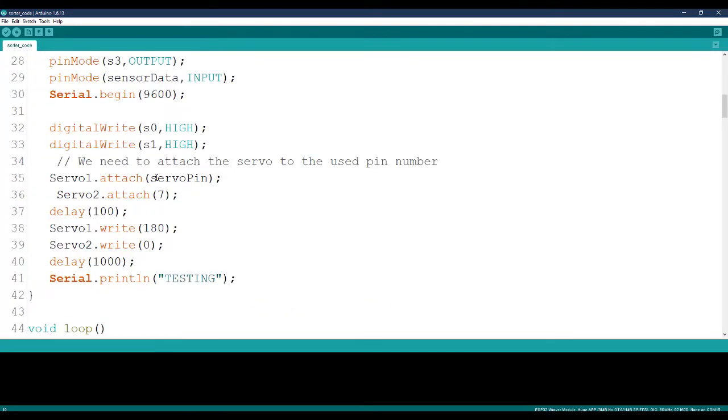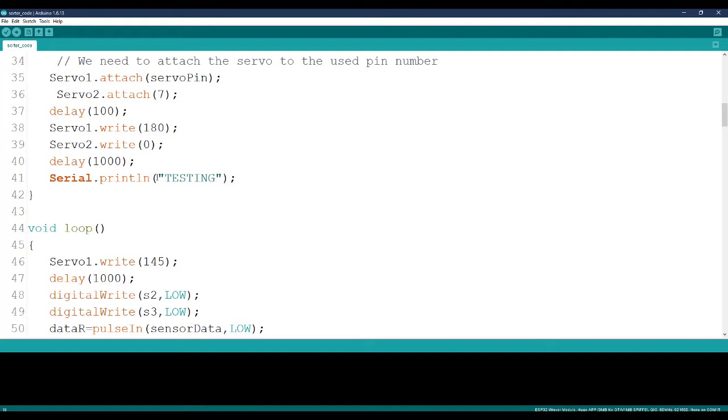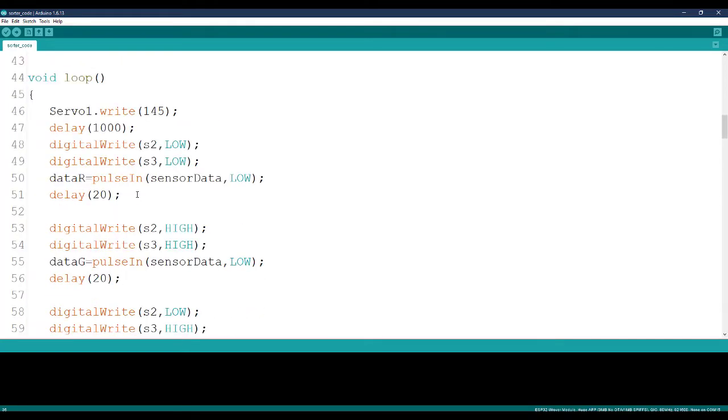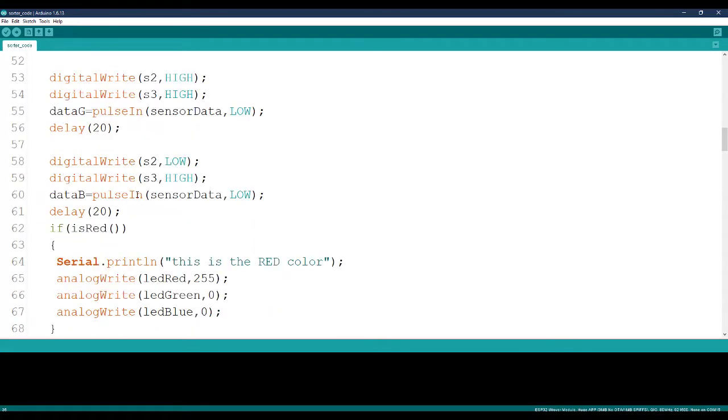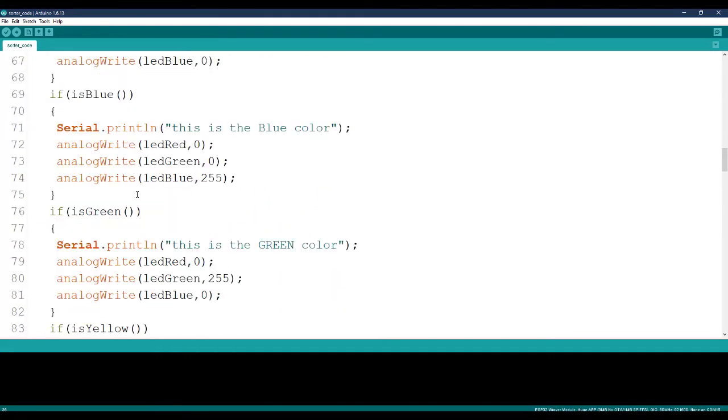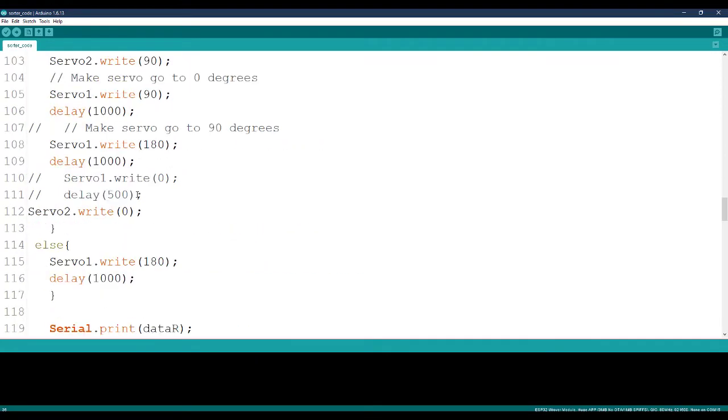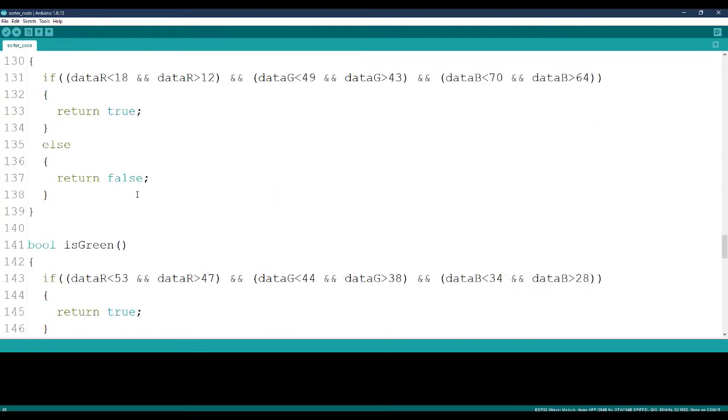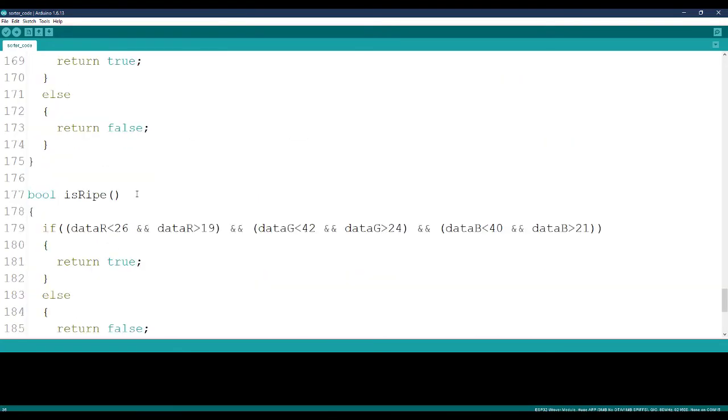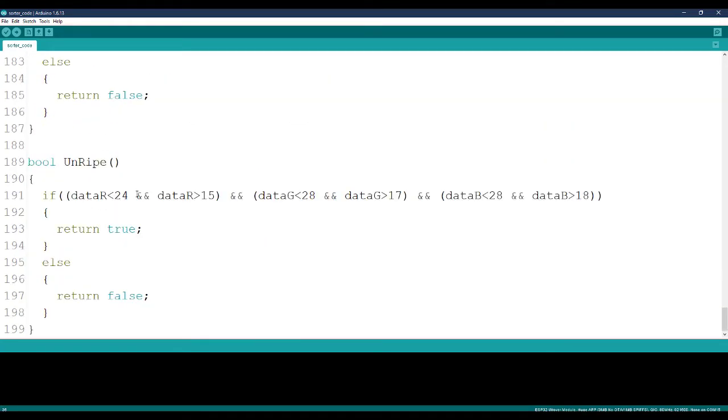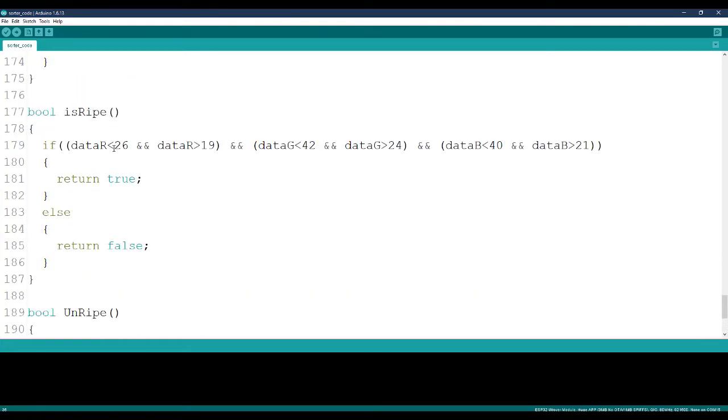So that's the code here. We also have the second one attached to servo, smaller servo motor. So this is actually the code that does the whole thing in the project. So I'm going to make a special video trying to explain how it traps the unripe and the ripe.